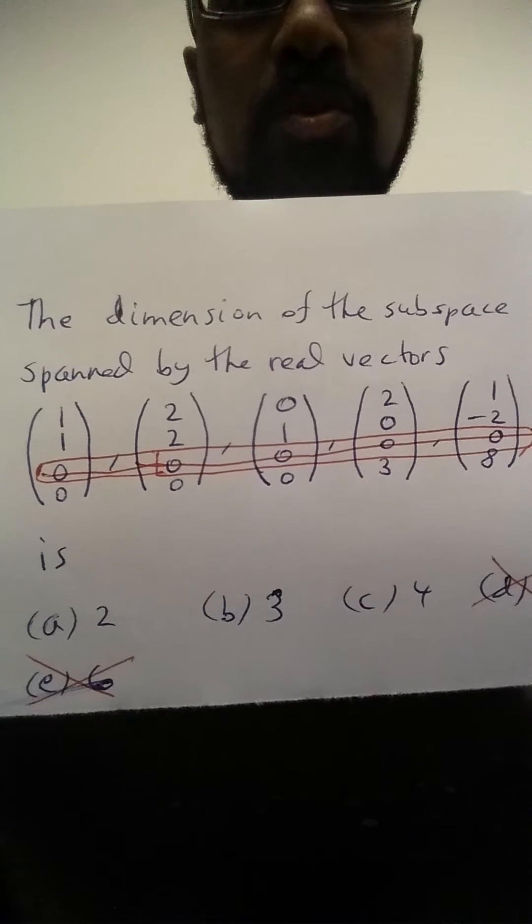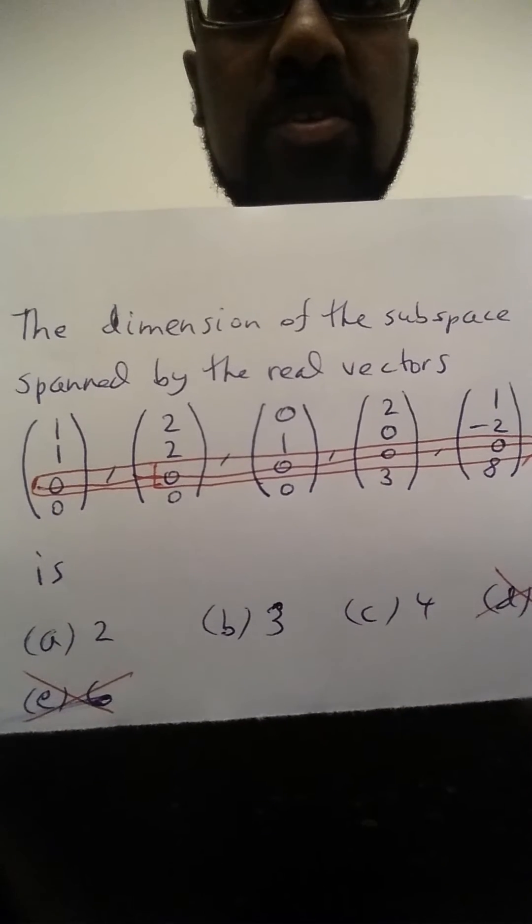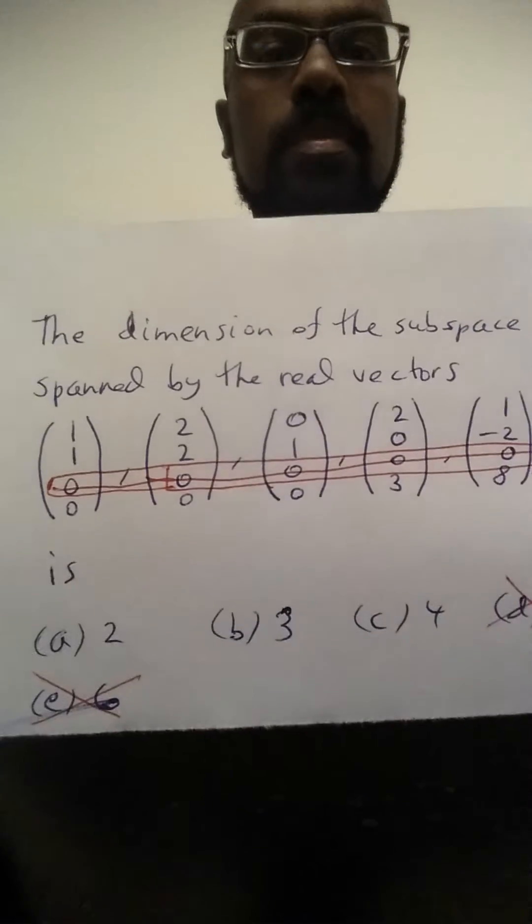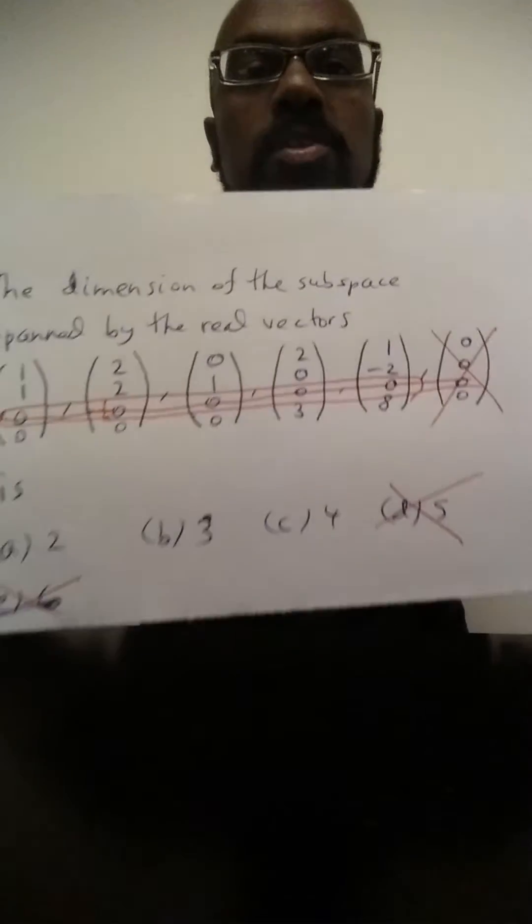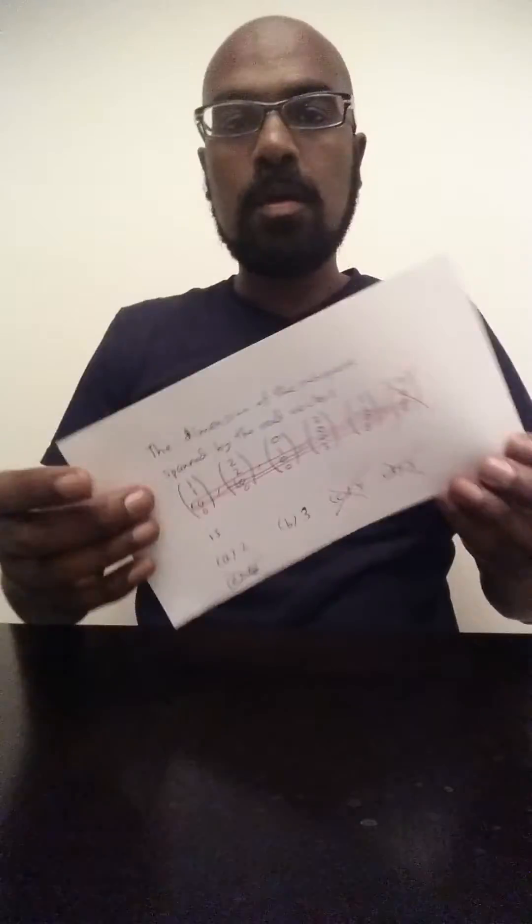Now we're down to looking at the span of a set of vectors in R3. And so the dimension is going to be at most 3, so we can eliminate 4 as an option.